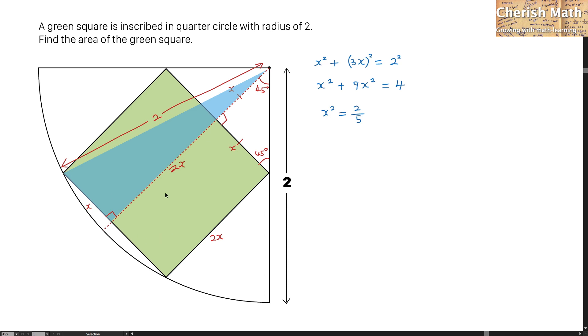To work out the area of this green square, I'm going to use 2x of the side length multiplied by 2x. And that is going to get the area of 4x squared. I need to substitute the value of x squared as 2 fifths into this equation.